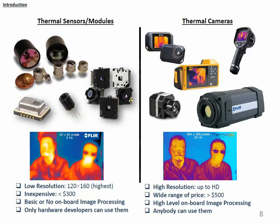I'd like to expand on this a bit more. We have thermal sensor modules and thermal cameras. Most of us are familiar with thermal cameras — this is what we normally use. The thermal sensor module is something that hardware developers usually use — it's an electronic component used in your own developments. Currently, the highest resolution available in the market is 120 by 160 pixels from FLIR. Sensor modules are relatively inexpensive, but they don't have any on-board processing.